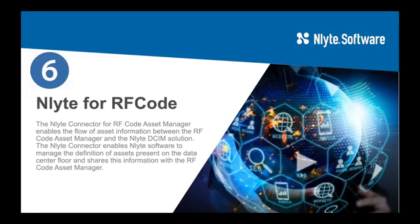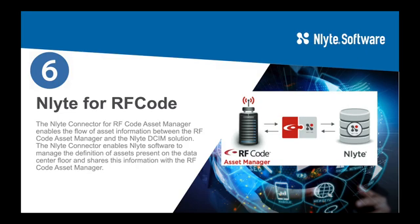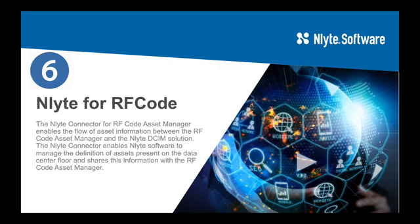The number six most sold connector or module for InLite solutions is the InLite RF Code Connector. This connector connects to the RF Code Asset Manager — for those who are not familiar, it's an RFID solution. It shares information between InLite Asset Optimizer and RF Code. So if you're tracking assets using RF Code, you can populate that information automatically inside the InLite solution and synchronize information back and forth between the two different systems.